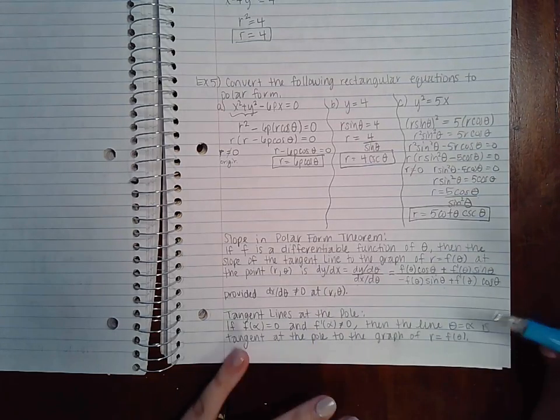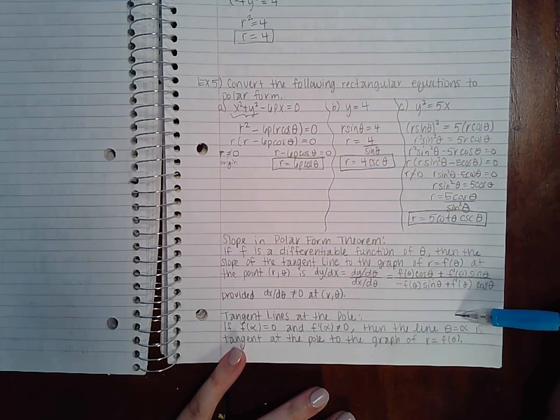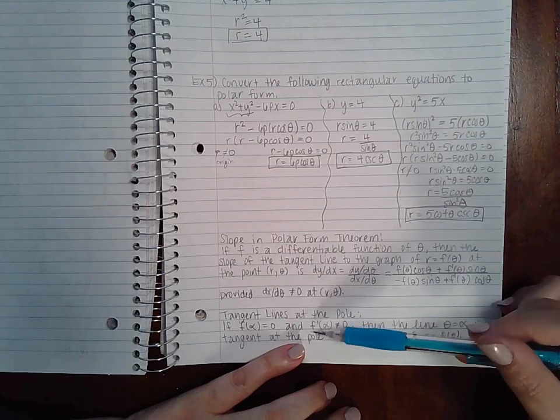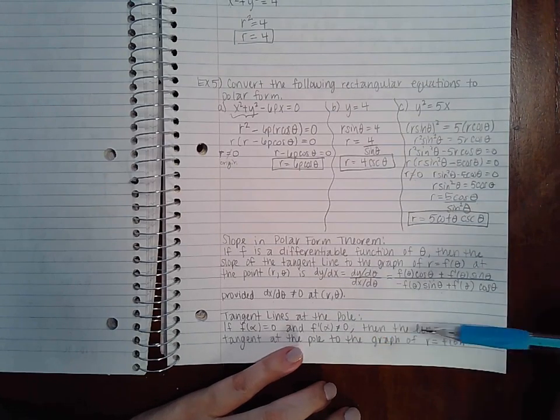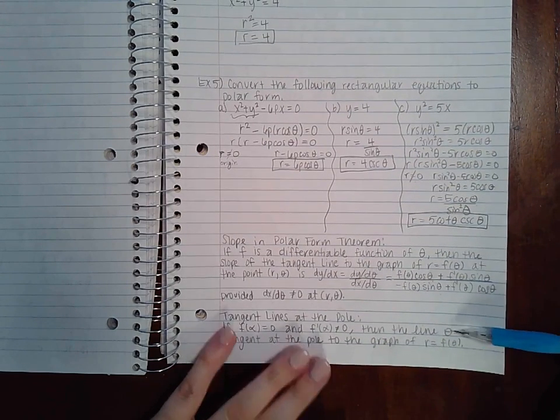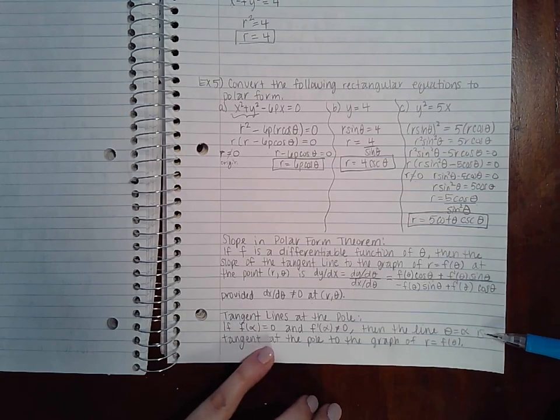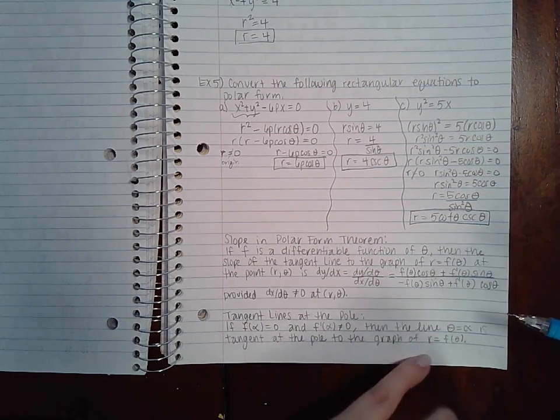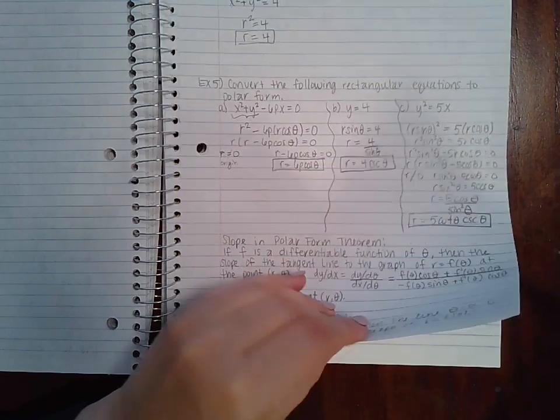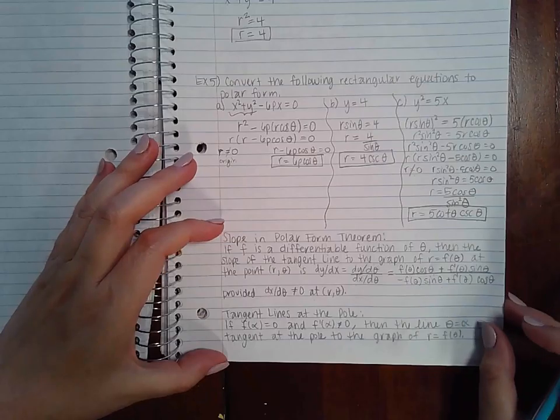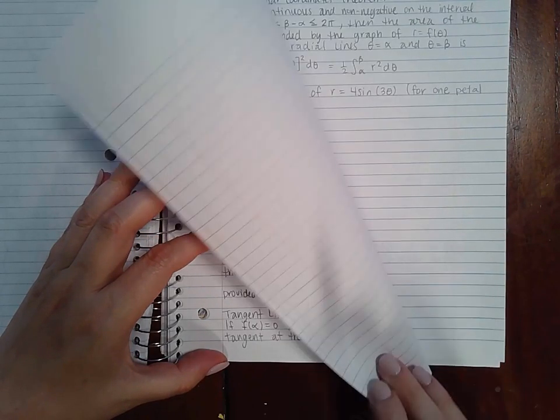The tangent lines at the pole: so if f of alpha equals zero and if f prime of alpha does not equal zero, then the line theta equal to alpha is tangent at the pole to the graph of f theta. Now these are for definition purposes only. We will not be using this information all too much in this class.